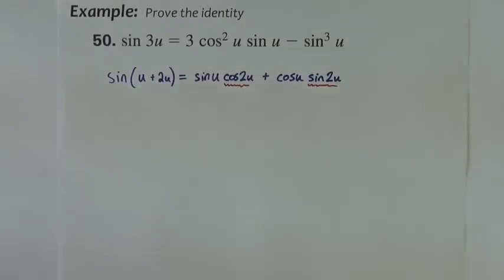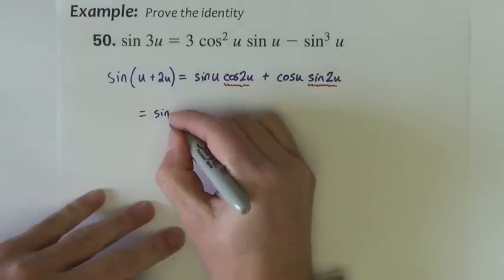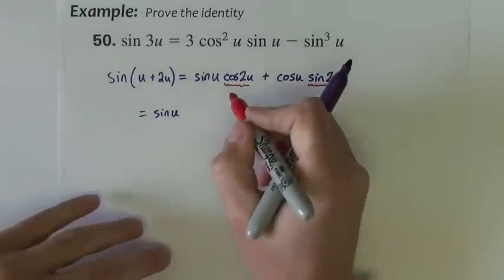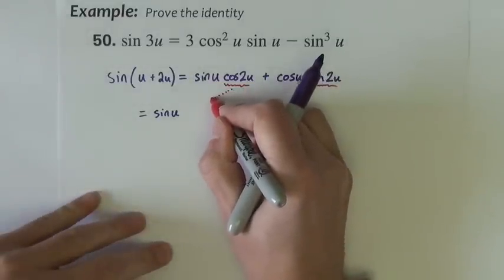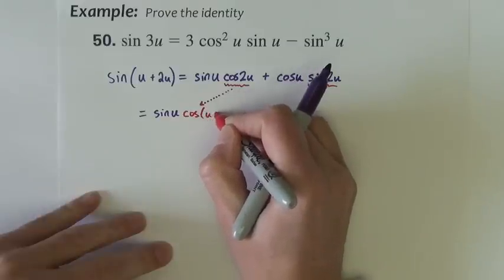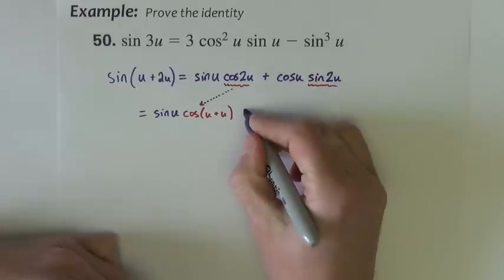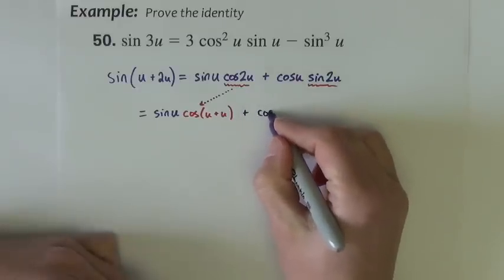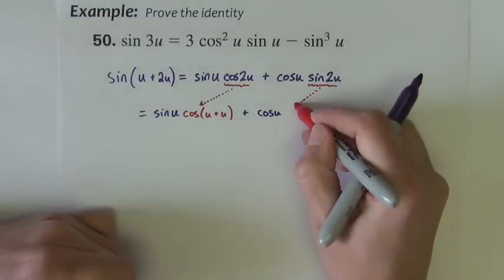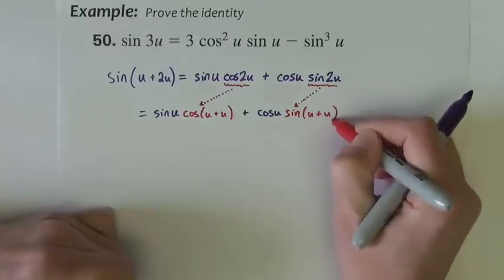So I'm going to keep, let's come over here so we have some room, I'm going to keep this sine u, but the cosine 2u is going to become cosine u plus u, plus, and I've got this cosine u, this sine 2u is going to become sine u plus u.